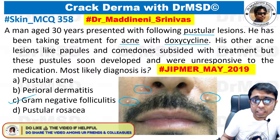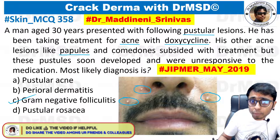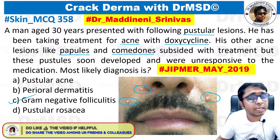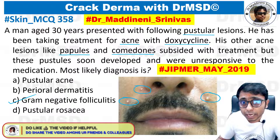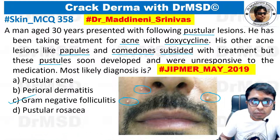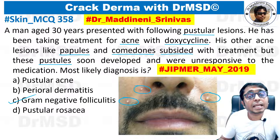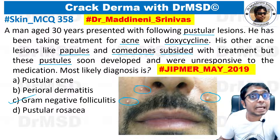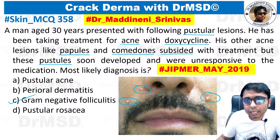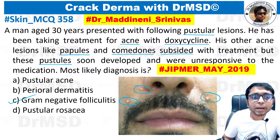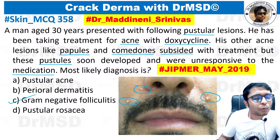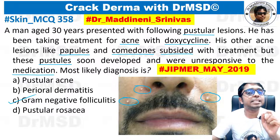His other acne lesions like papules and comedones — all of the other lesions after the initiation of doxycycline — have subsided. But now, pustules which were previously not present are developing fresh, and they are unresponsive to doxycycline which was already being administered. So what is the most likely diagnosis for this condition?